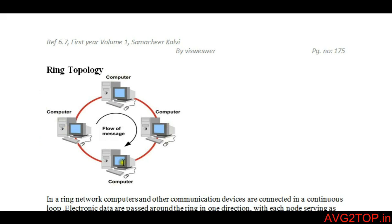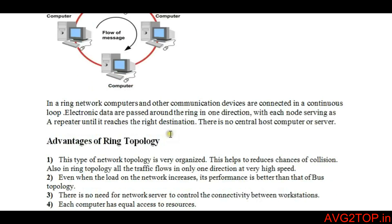The data is sent from A to B in one direction only. Computer A sends data to B, and it transfers in one direction, forming a looping concept that ensures the flow repeats until the data is received at the receiver's end. This is ring topology.